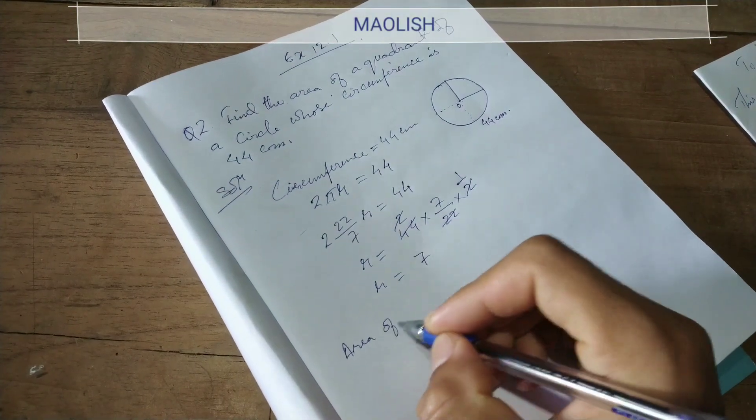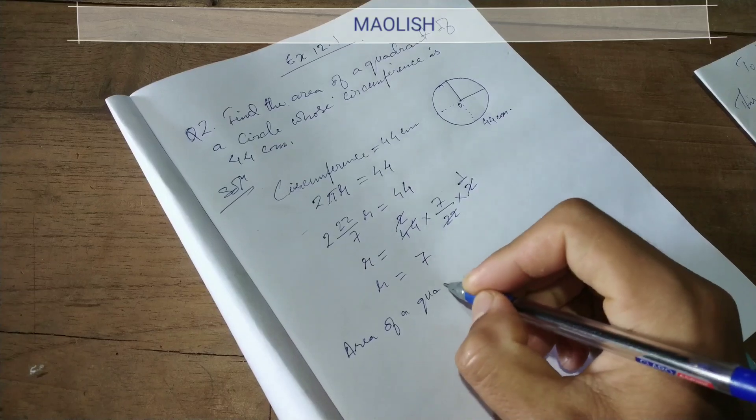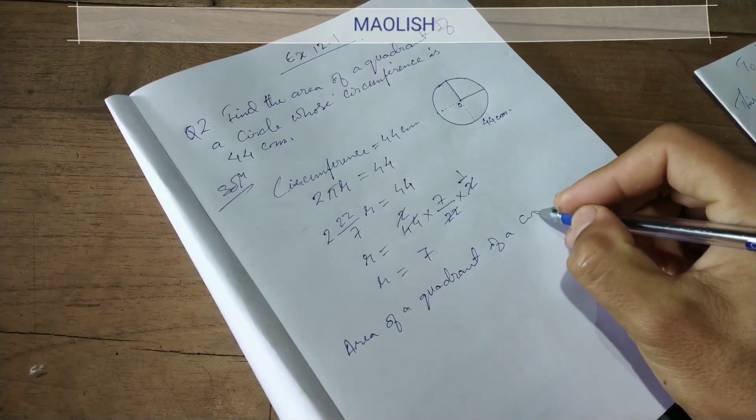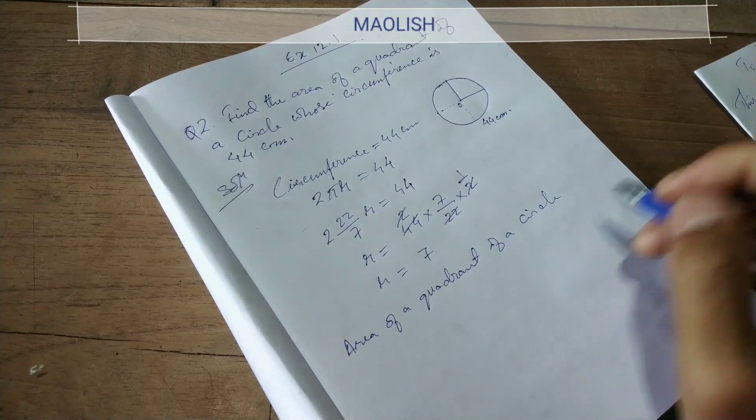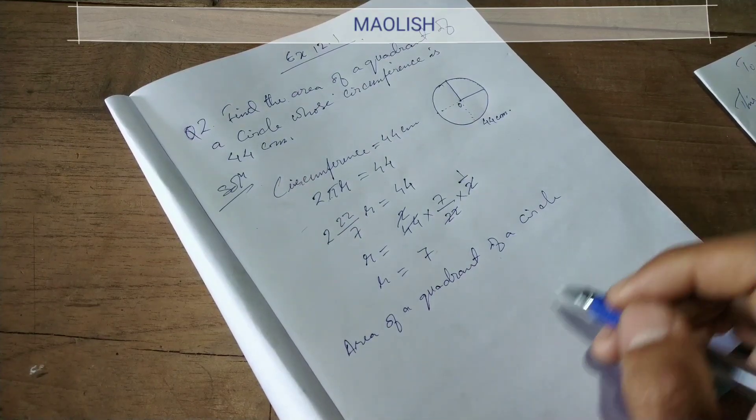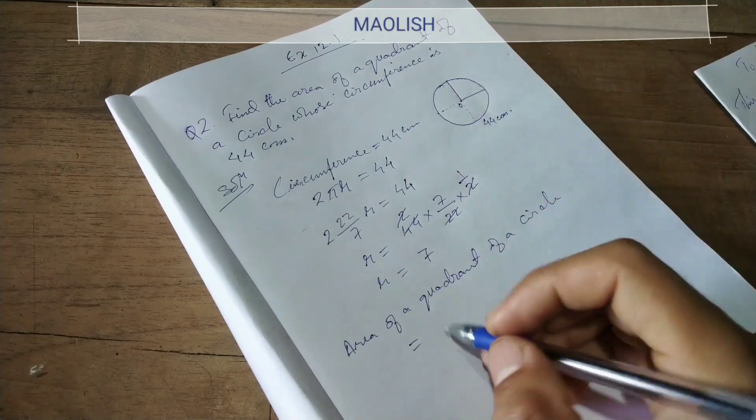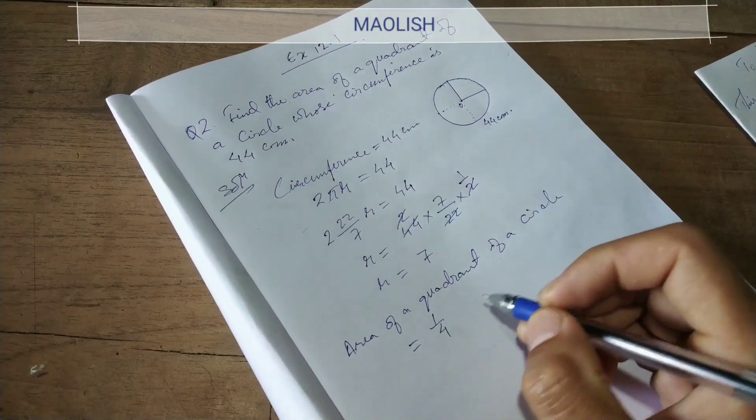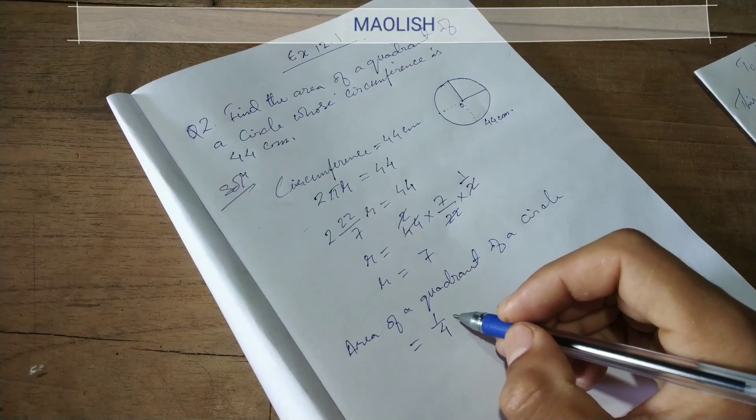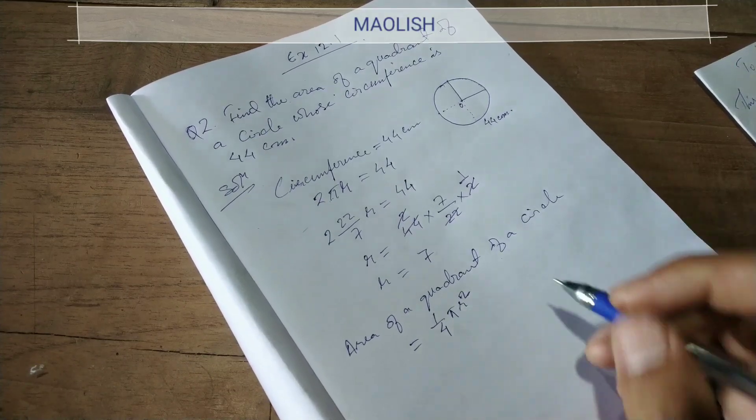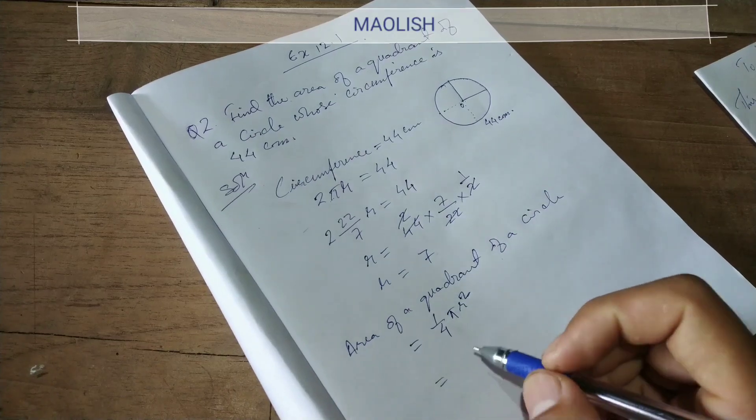So, area of a quadrant. Quadrant of a circle. Area of a quadrant of a circle equal to: